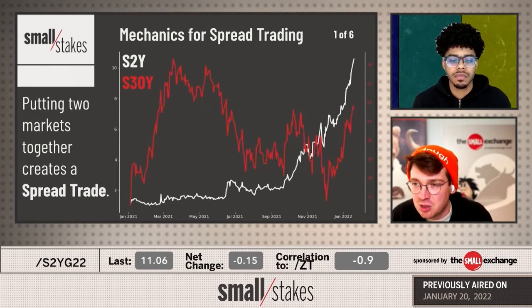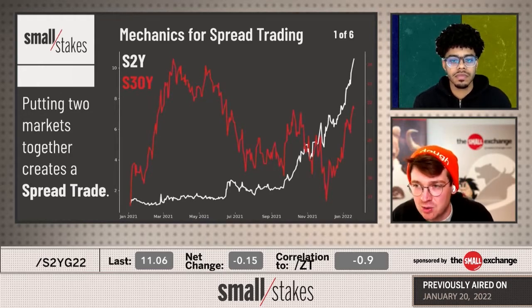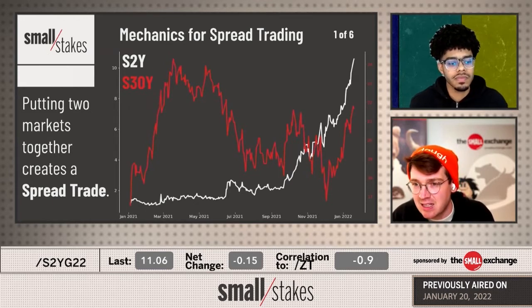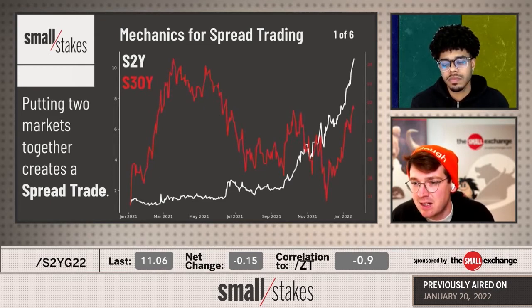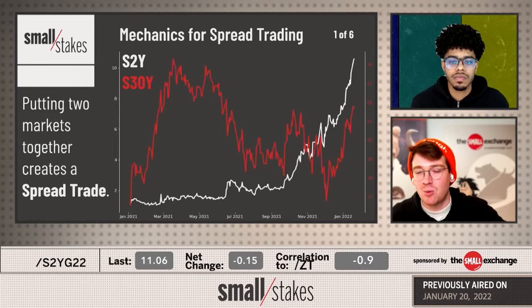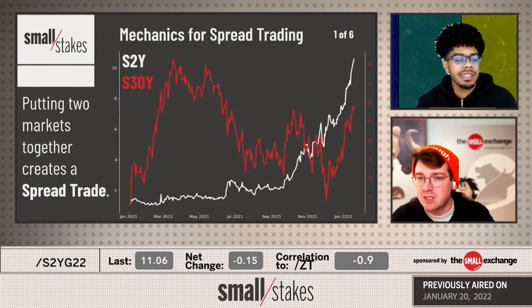You take two similar markets. Here we have interest rates — you've got the two-year and the 30-year in red, the two-year in white, two different yield markets but the same interest rate asset class. And they're performing differently. I think there's opportunity in that. Do you have any questions on what spread trading is or how it's different than outrights?